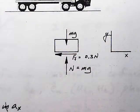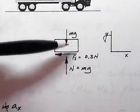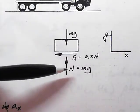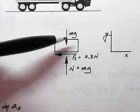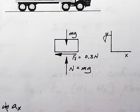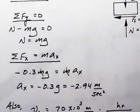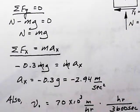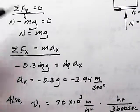First thing we do is sum of forces in the y direction, and that's going to tell us that the normal force is equal to the weight, no surprise there. Sum of forces in the x direction equals mass times acceleration.